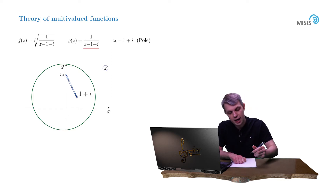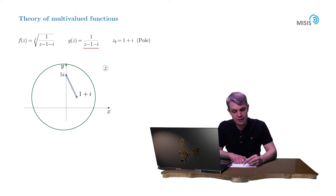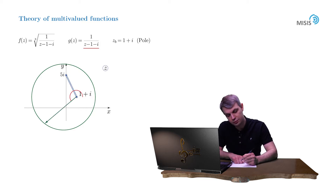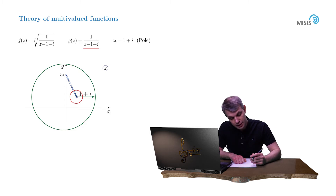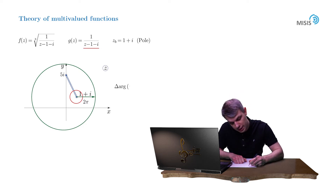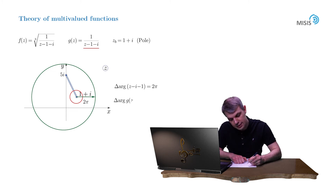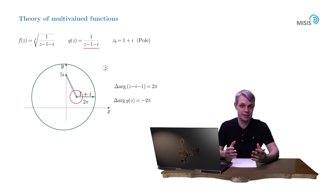To trace the change, we need to follow the argument of the g function, which is defined by the argument of the complex number z minus 1 minus i in its denominator. This complex number has its origin at point 1 plus i and ends at some point on the contour. Once we make a full rotation around the contour, this arrow also makes a full rotation, and the change of its argument is 2π in the counterclockwise direction. So the delta argument of z minus 1 minus i is 2π, meaning the change of the argument of g is negative 2π. This inevitably causes the function to branch.